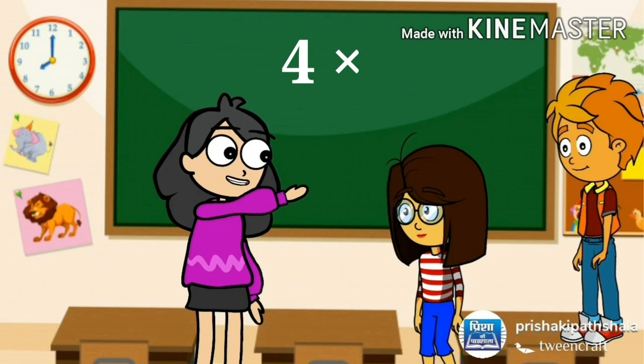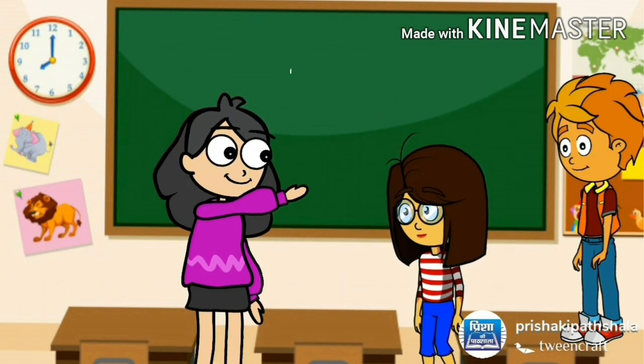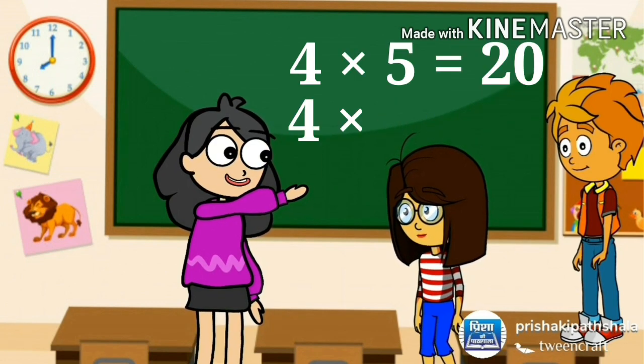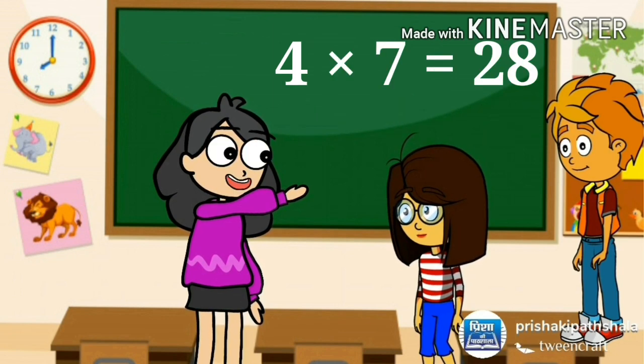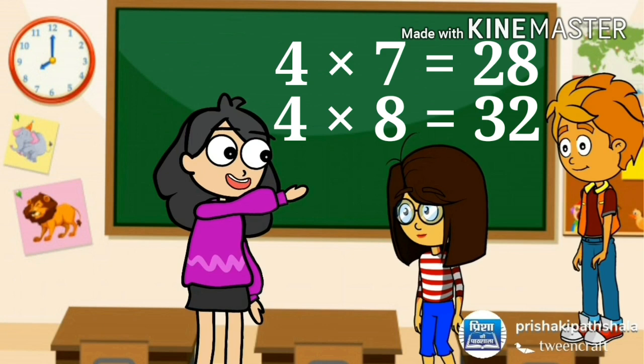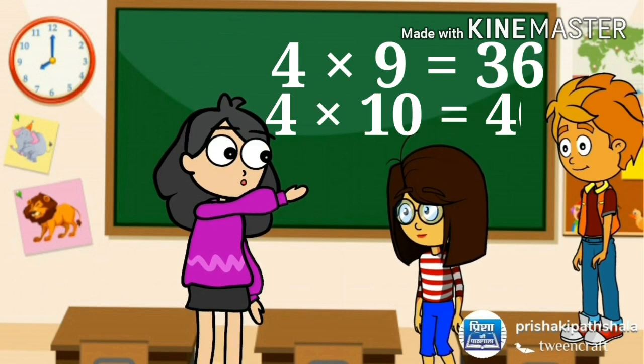4 1's are 4, 4 2's are 8, 4 3's are 12, 4 4's are 16, 4 5's are 20, 4 6's are 24, 4 7's are 28, 4 8's are 32, 4 9's are 36, 4 10's are 40.